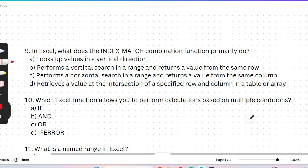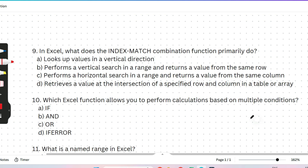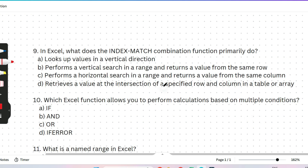I have already discussed these functions in the Accenture playlist, so it will be easier for you to answer. The correct answer is: performs a vertical search in a range and returns a value from the same row. I hope you understood.